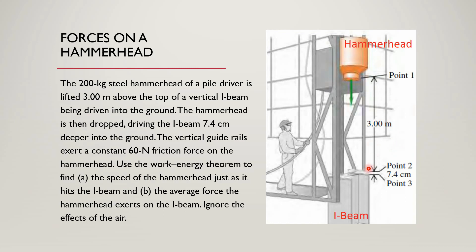We will use the work-energy principle to calculate the velocity of the hammerhead at position 0.2 and the average force the hammerhead exerts on the I-beam. These two are the target variables. It is also given that the mass of the hammerhead is 200 kg and frictional forces are 60 Newtons acting as the hammerhead moves downward.